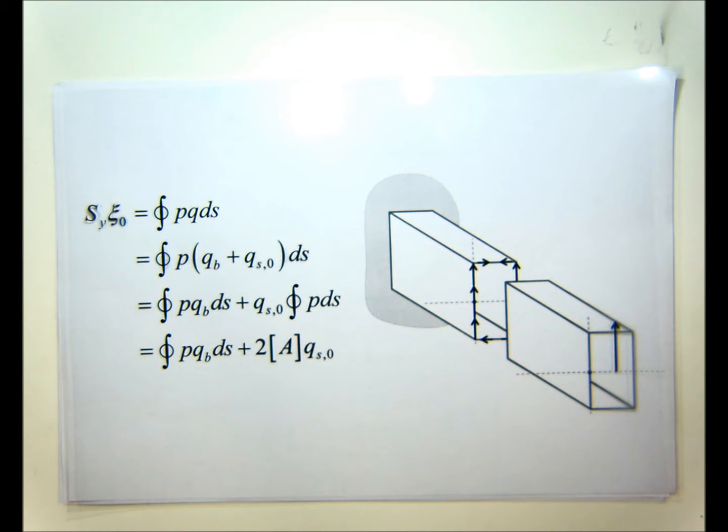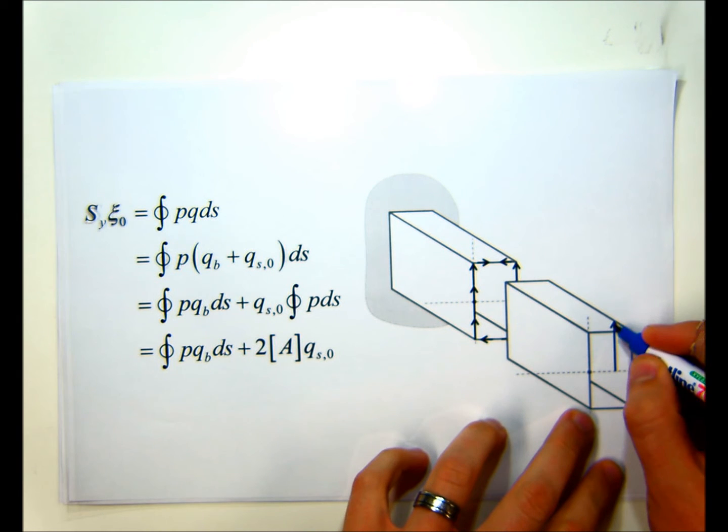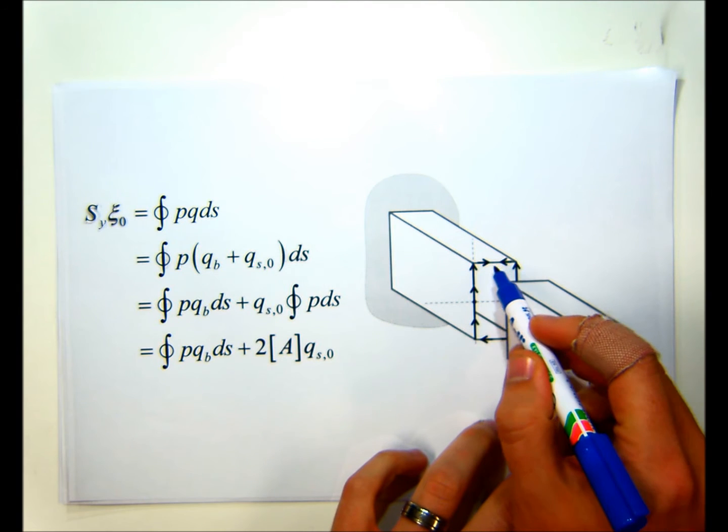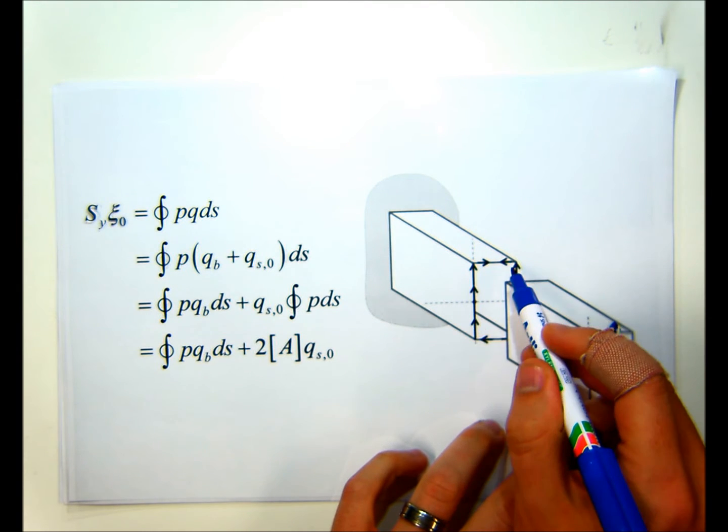To find the constant shear flow, we have to use moment equilibrium in the section. So if we look at our section over here on the right, we have some externally applied load here, and some internal shear forces that are set up, or some internal shear flows.